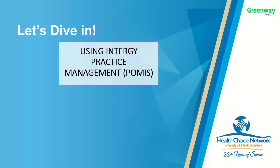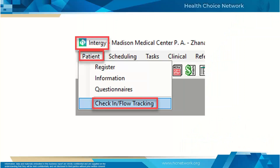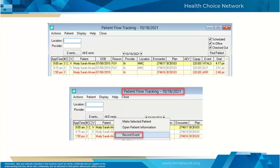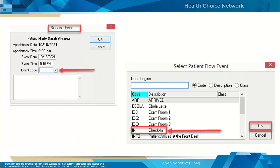Let's take a look at some examples. First, we're going to look at the Intergy Practice Management, also known as PAMAS. In the upper left hand corner under Patient, go to Check In Flow Tracking. This will bring you to the patient flow tracking screen. Find the patient that you want to check in, right click it, and go to Record Event. Under Record Event, you will find Event Code. Pull the dropdown box and you will see a list of codes — select Check In or Check Out, whichever code is appropriate.